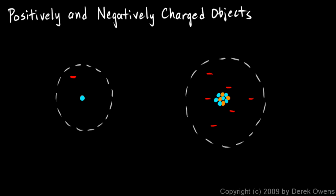The positive charge on the proton exactly balances the negative charge on the electron, so the atom as a whole is electrically neutral.